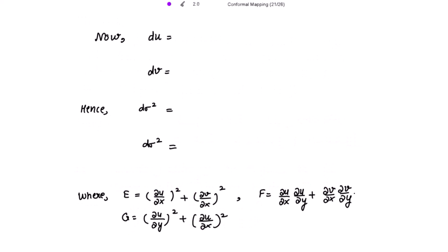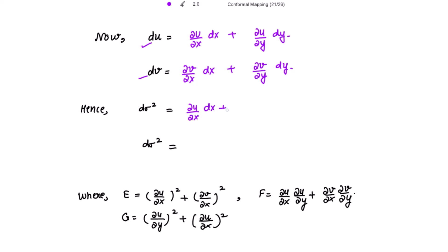Now, du can be written as — because u is a function of x and y — du = (∂u/∂x)dx + (∂u/∂y)dy. And dv can be written as (∂v/∂x)dx + (∂v/∂y)dy.